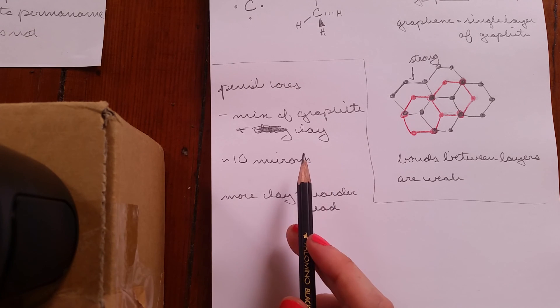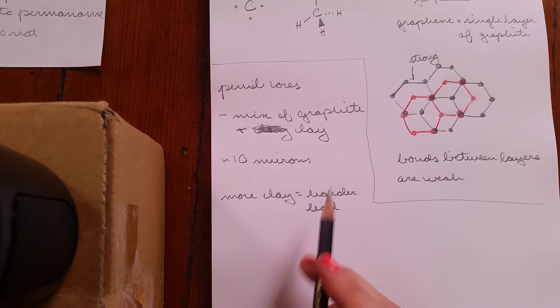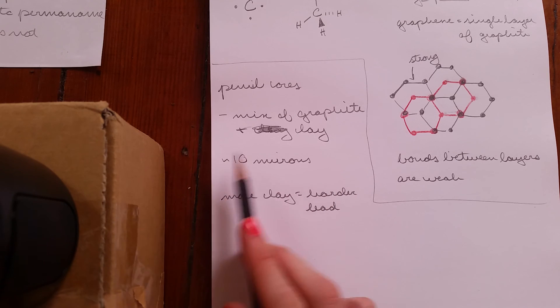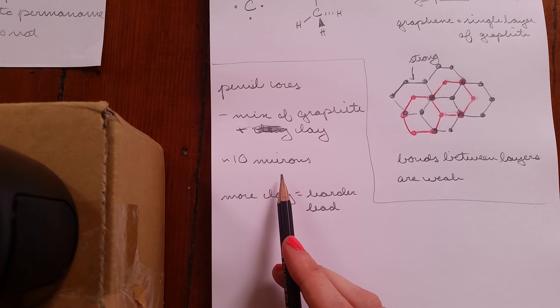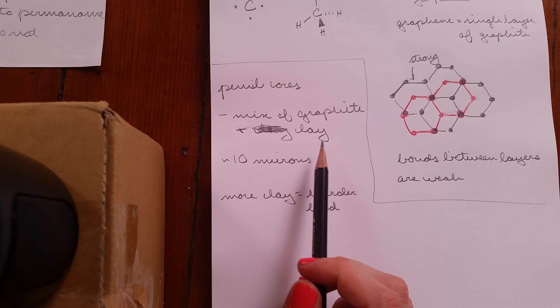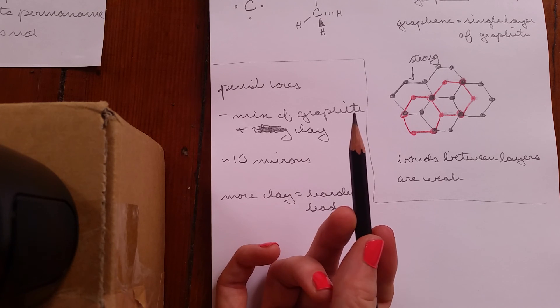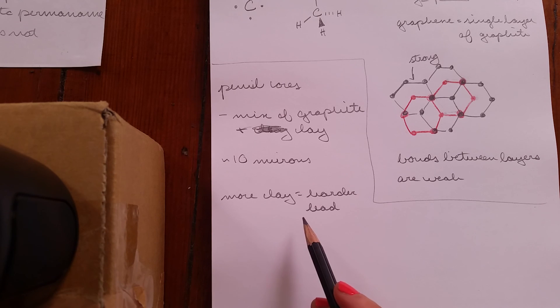So they crush up the stuff into these 10 micron sized particles. And then they mix it together with a whole bunch of other stuff. And they do this fancy schmancy industrial process. And then what they do is they shape the clay graphite and other stuff mixture into the pencil cores, basically what you see in your pencil. And then they fire those in a kiln to dry them out and harden them like you would do with any other pottery.